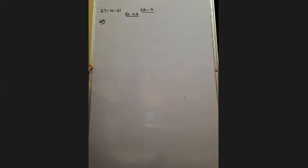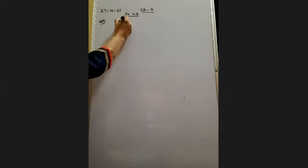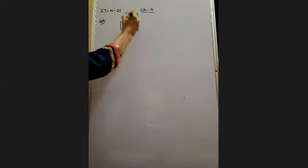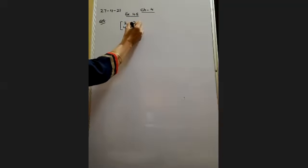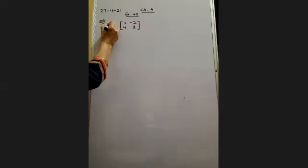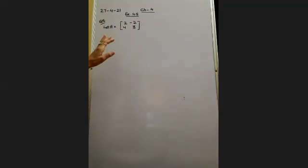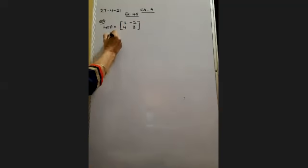Starting with question number five, we are given a 2×2 order matrix: 2, 4, minus 2, and 3. Let us name this matrix as A. Now, for finding out whether its inverse exists or not, first of all we have to find its determinant.